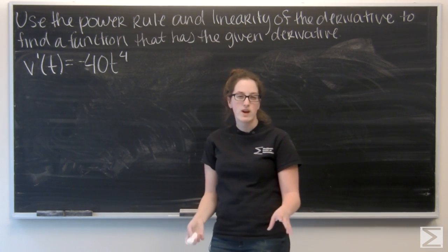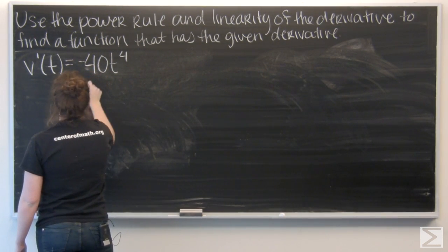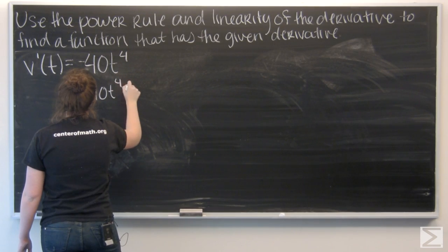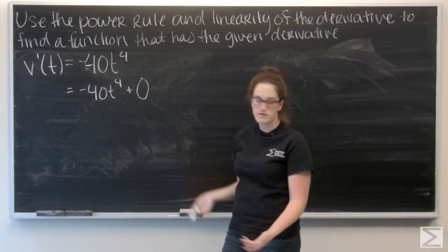So let me start by rewriting v prime a little bit. Just going to add a zero. So those two things are the same, right?